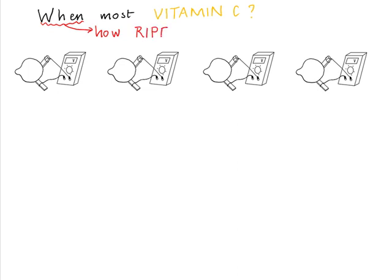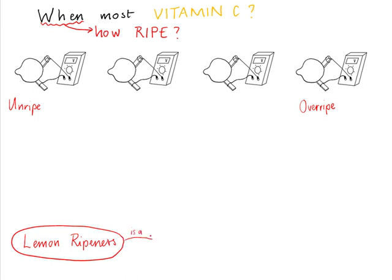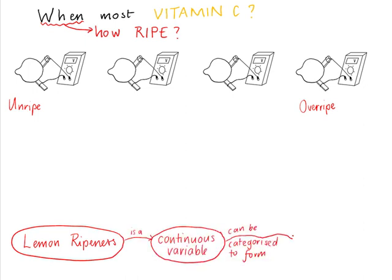Lemons change gradually from being completely unripe to being so ripe that they're decomposing and rotting. They don't go in spurts — unripe, then suddenly nearly ripe, then suddenly ripe, then suddenly overripe. No, there's a gradual change. So lemon ripeness is in fact a continuous variable, but for simplicity he represented that continuous variable in four discontinuous categories.